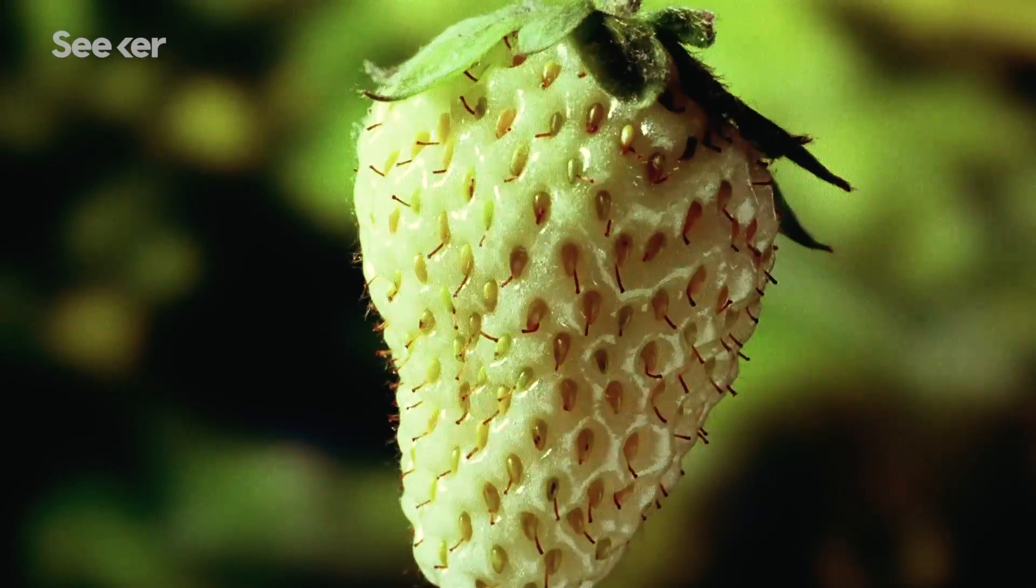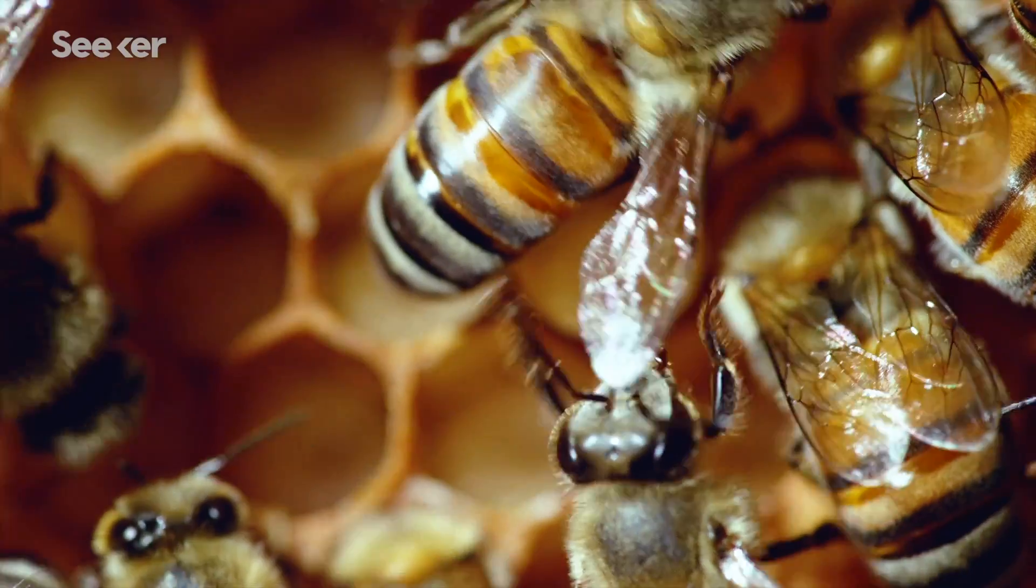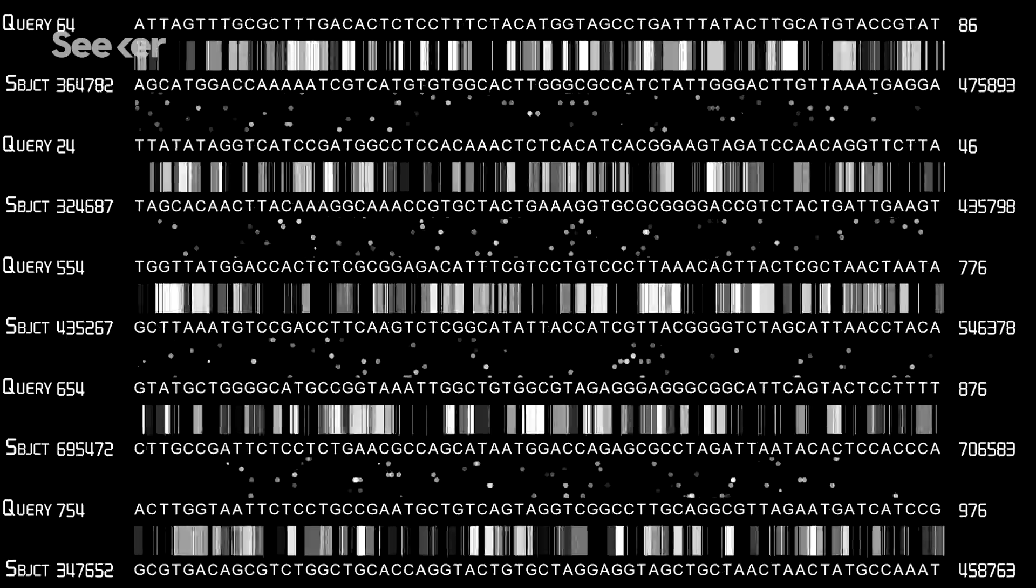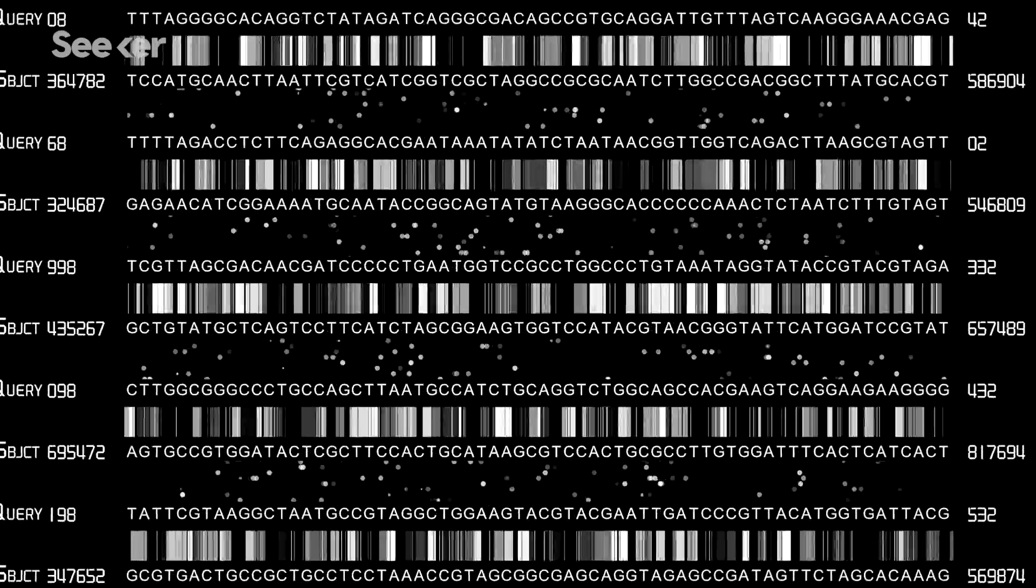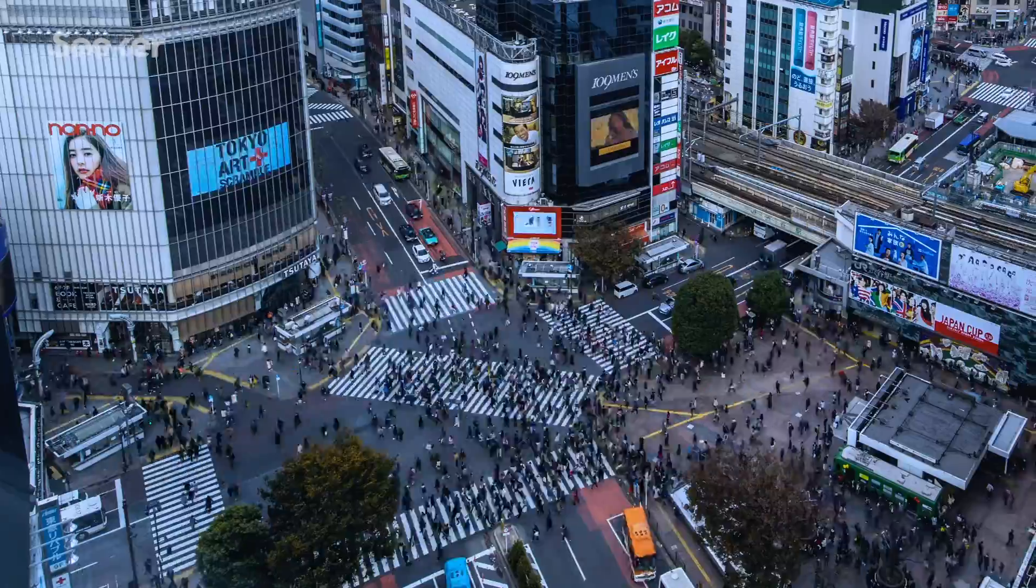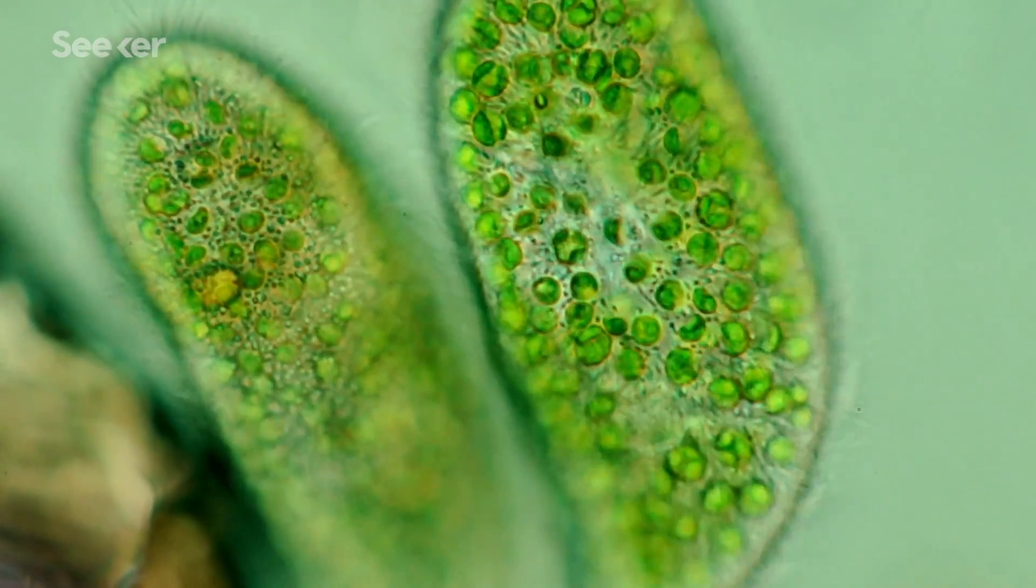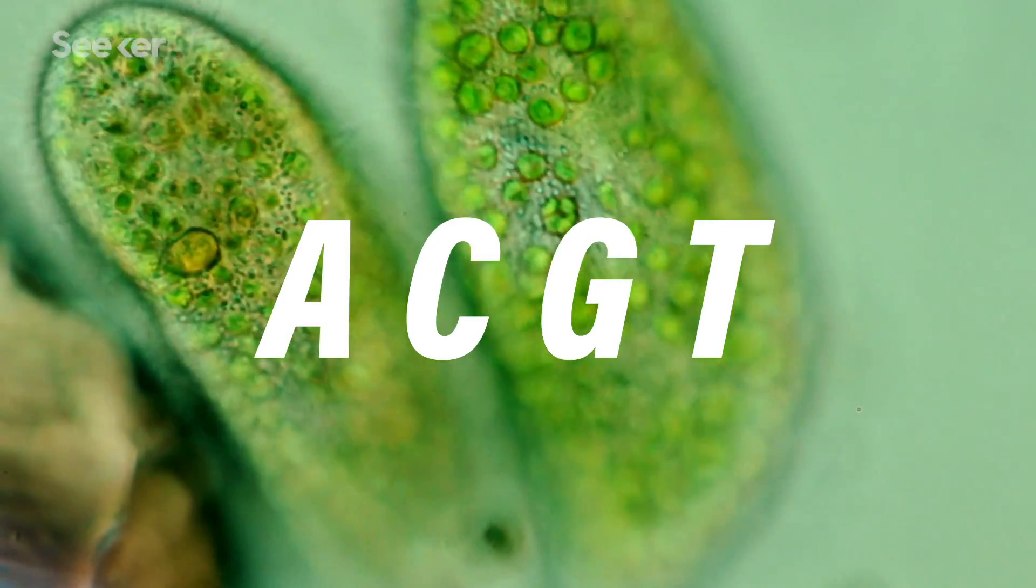Nature's had billions of years of trial and error to engineer biology and select its best designs. But we only just figured out how to read the source code 50 years ago. Because every living thing—you, me, this exotic bird, that oozing amoeba—are built from a unique set of instructions that come down to just four letters.